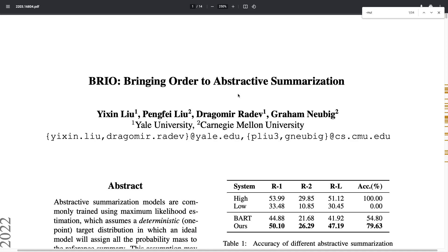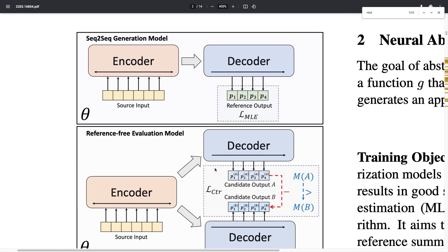Hello everyone. Today we are taking a look at BRIO: Bringing Order to Abstractive Summarization, by authors from Yale University and Carnegie Mellon University. This paper focuses on the task of automatic abstractive text summarization, where the goal is to generate a summary for a given input article.